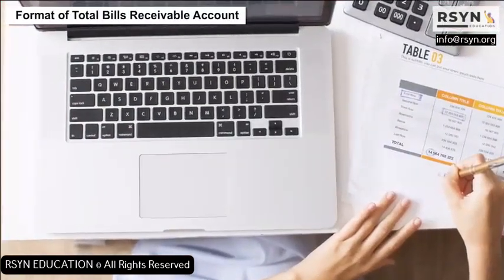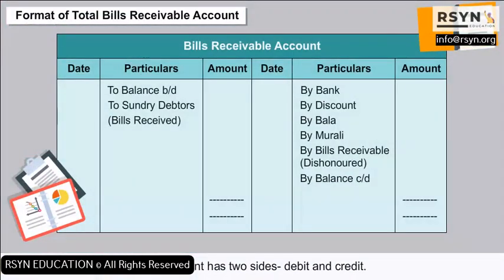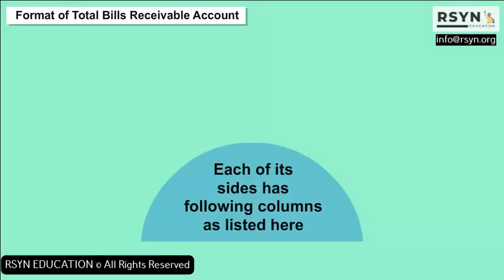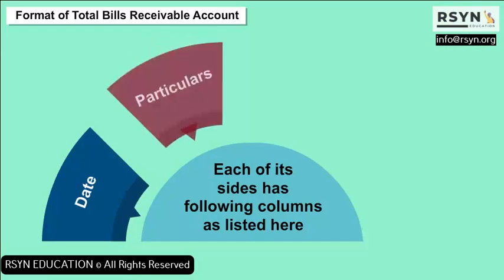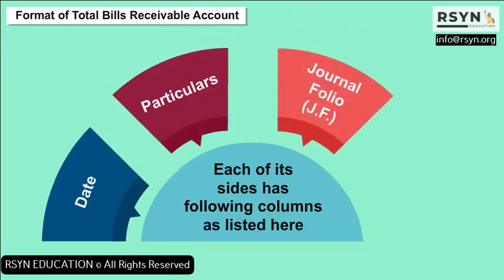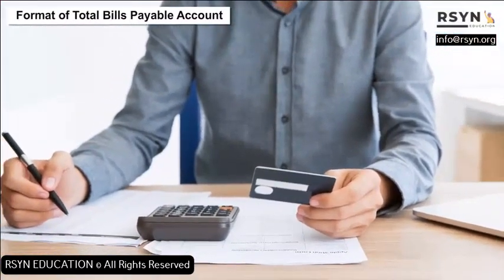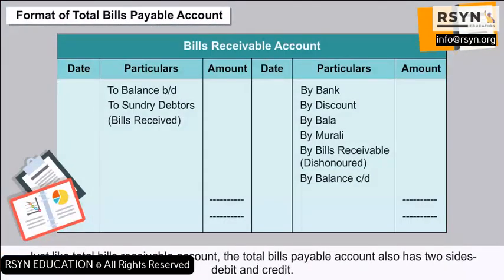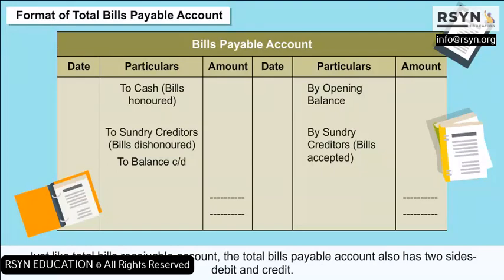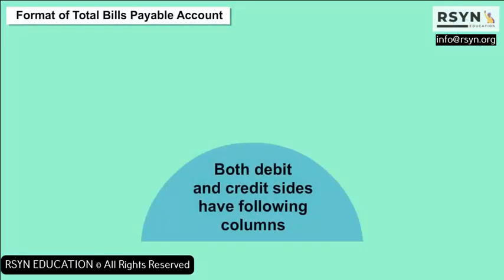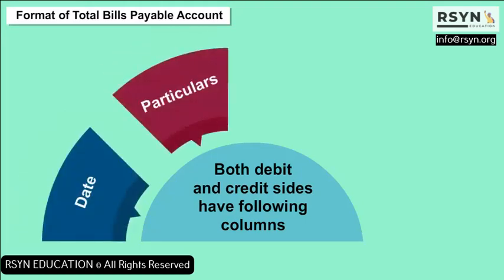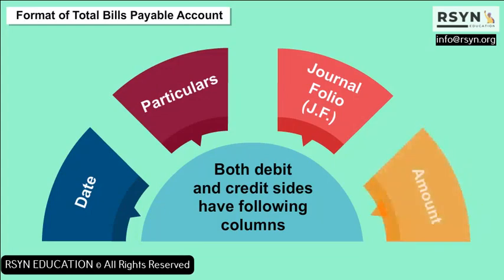Format of Total Bills Receivable Account: This account has two sides — debit and credit. Each side has the following columns: Date, Particulars, Journal Folio (JF), and Amount. Format of Total Bills Payable Account: Just like the Total Bills Receivable Account, the Total Bills Payable Account also has two sides — Debit and Credit — with the same columns: Date, Particulars, Journal Folio (JF), and Amount.